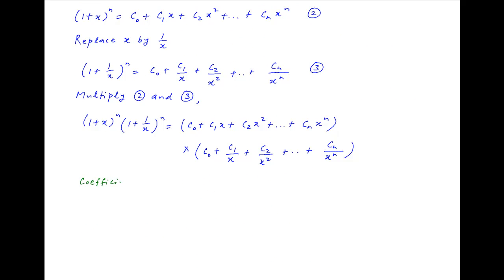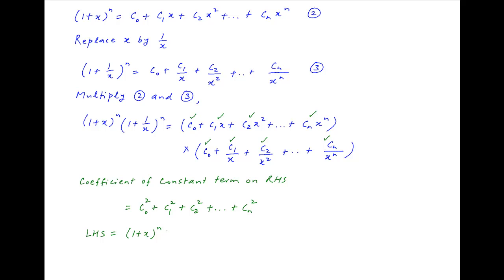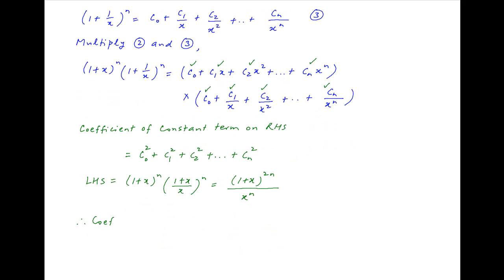On the right hand side, the coefficient of the constant term is obtained by multiplying the first term in the first bracket with the first term in the second bracket giving C0², plus C1² from the second terms, and so on up to Cn². The left hand side simplifies to (1 + x)^(2n) / x^n, so the coefficient of the constant term on the left equals the coefficient of x^n in (1 + x)^(2n).